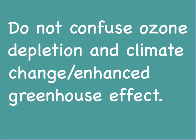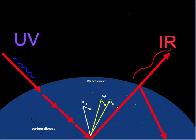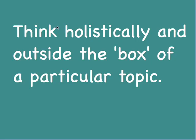Contradictions are something you must avoid. One significant contradiction that students show in their writing involves ozone depletion and climate change, or the enhanced greenhouse effect. If these confuse you, it is useful to review those topics. In general, it is very important in Environmental Systems and Societies to think holistically and outside the box of a particular topic.